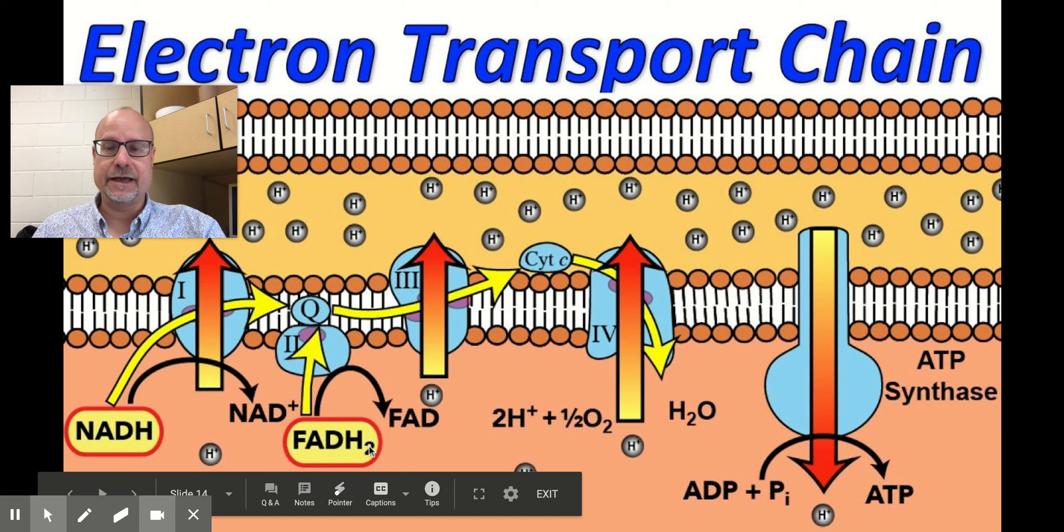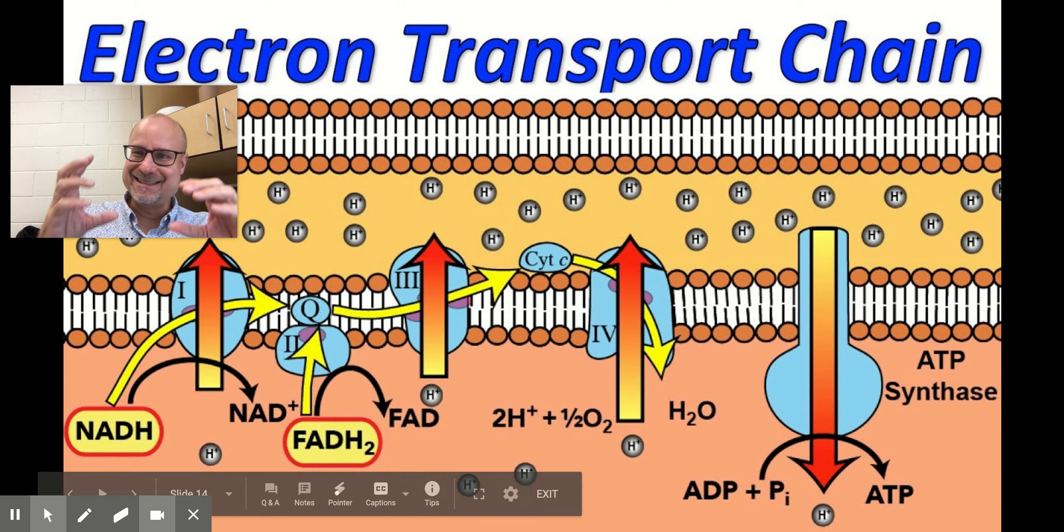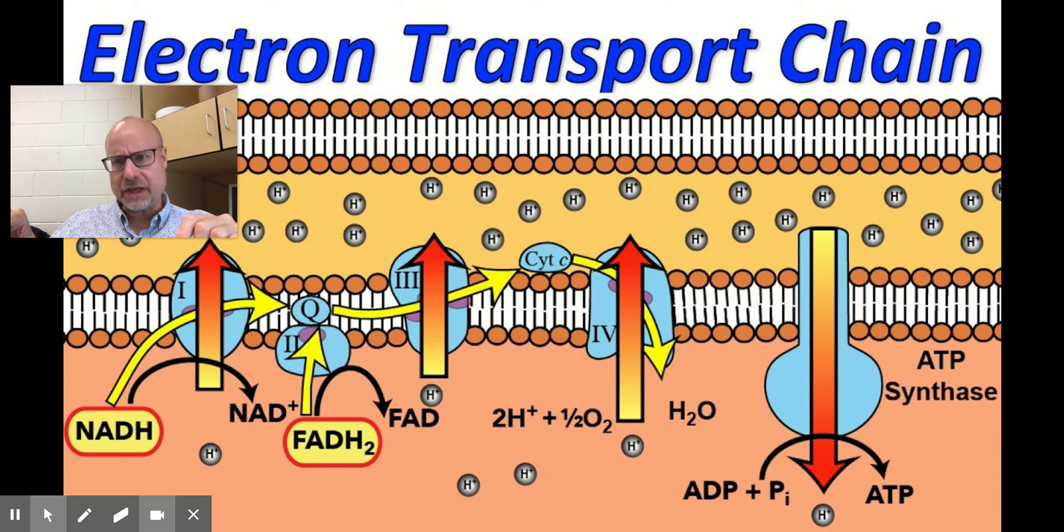The FADH2 is also spent in order to send these hydrogen ions back out into this space between the internal membrane of the mitochondria and the outside of the bean shape, that membrane of the mitochondria.